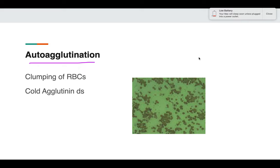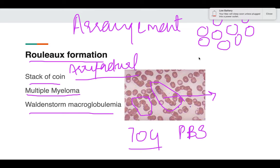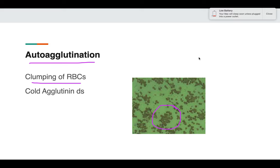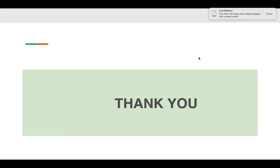Auto-agglutination is the last RBC arrangement — here the RBCs are clumped together, which is different from rouleaux formation where they are arranged as a stack of coins. In auto-agglutination, the RBCs are clumped together and this is seen in cold agglutinin disease. This concludes the examination of RBCs on the peripheral blood smear. Please like, share, and subscribe if you like these videos, and ask any queries in the comment box.